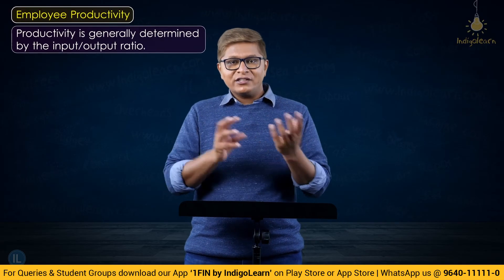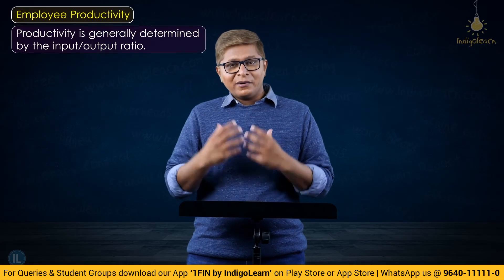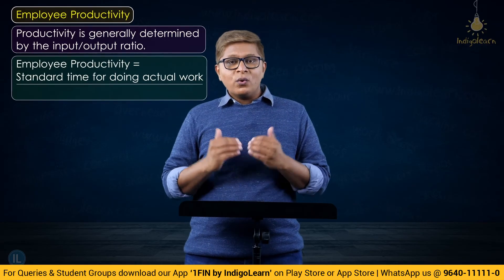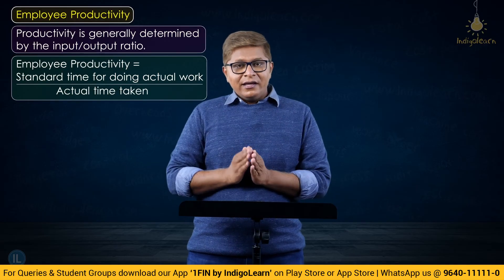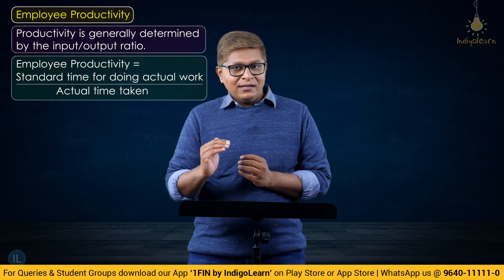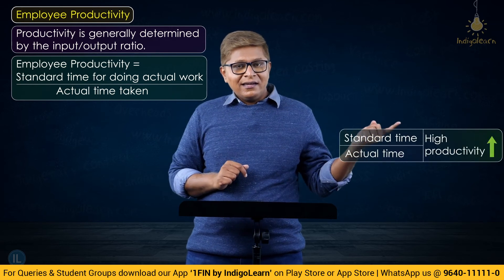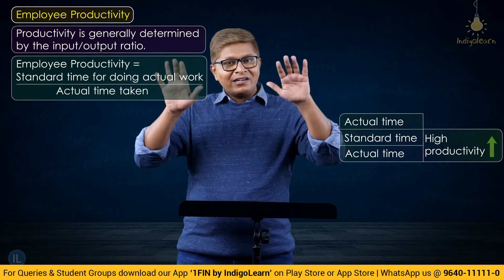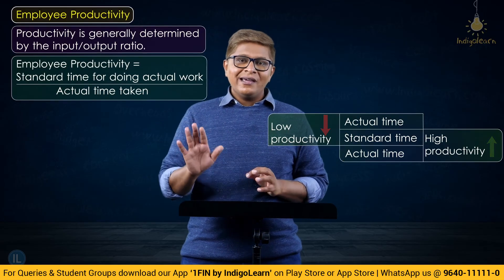A very similar term to employee efficiency is employee productivity. Here too we compare the time taken versus the standard — are we taking time as per standards, more, or less? If the actual time taken is less than the standard, productivity is high; if more than the standard, productivity is low. That is what employee productivity ratios measure.